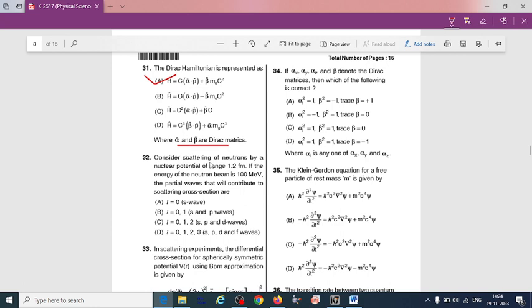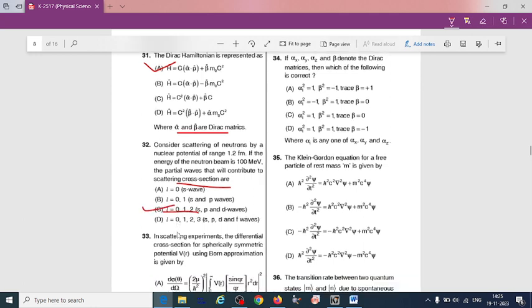Next question: Consider scattering of neutron by a nuclear potential of range 1.2 fm. If the energy of the neutron beam is 100 MeV, the partial waves that will contribute to scattering cross section are... So if we consider the scattering of neutrons, they can go up to the orbital angular momentum value s, p, d, f: 0, 1, and 2. So option C is correct.